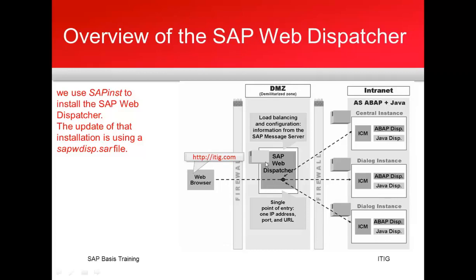The SAP Web Dispatcher is placed in this demilitarized zone, separately from the main systems. From an installation perspective, we can use the SAP INST tool to install the Web Dispatcher. If you want to download it, the file used is SAP WDISP.SAR.